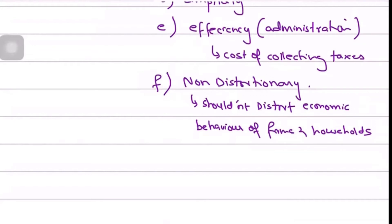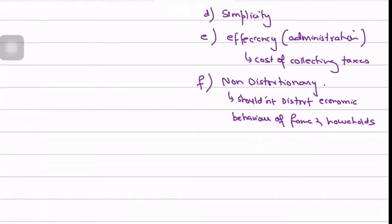So you are actually reducing the future economic growth of the economy — that is distortionary. The government is distorting the mechanism that creates employment by discouraging firms through taxes. Similarly, if you are taxing necessary goods, goods of daily use, that would reduce consumption and distort rational behavior and the mechanism through which consumers make decisions.